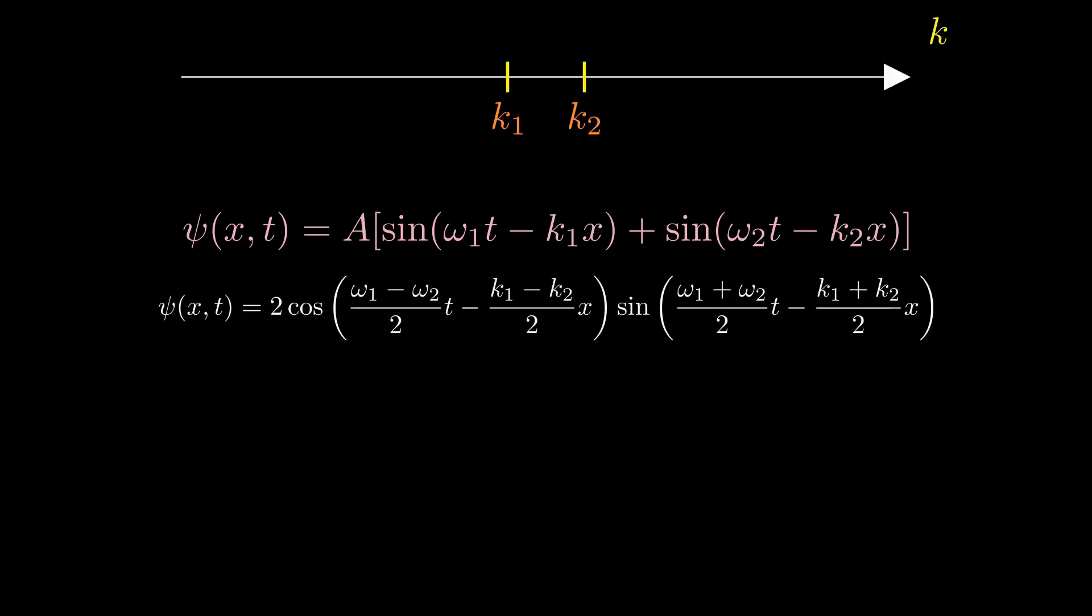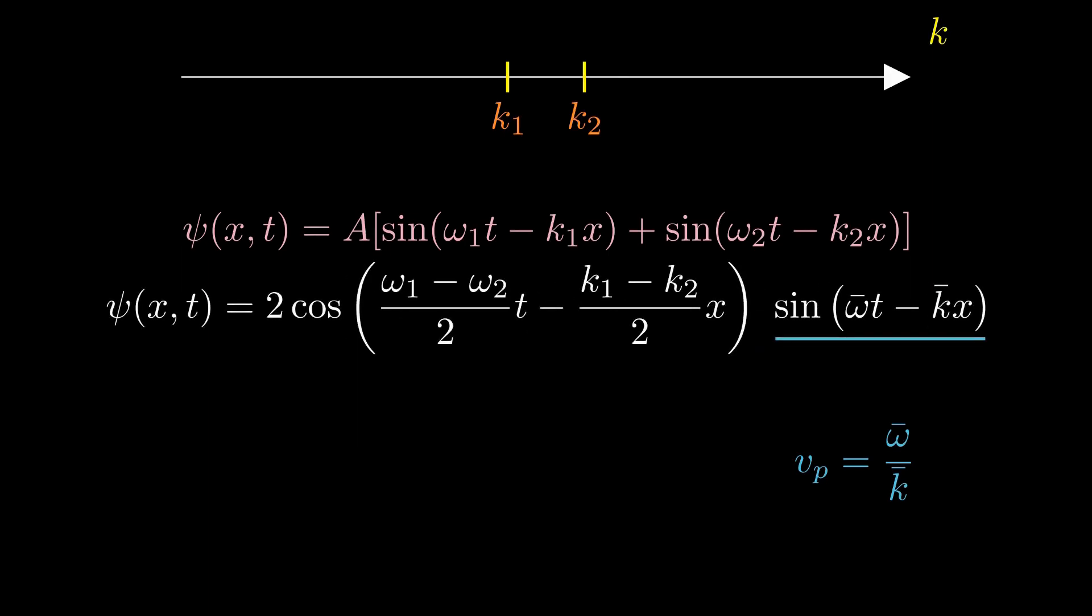Note that the second parameter, or the second factor, is the rapid oscillatory sine factor, and its speed is omega over k, where k and omega are the average k-value and the average frequency of the two sine waves. The first factor now modifies this second factor. It's also a sinusoidal function, but its speed is given by the differences.